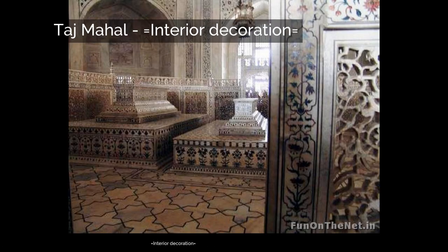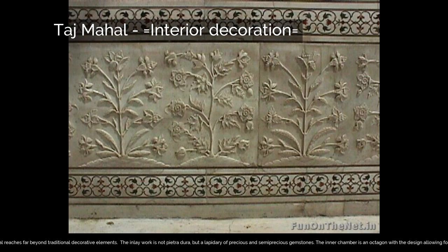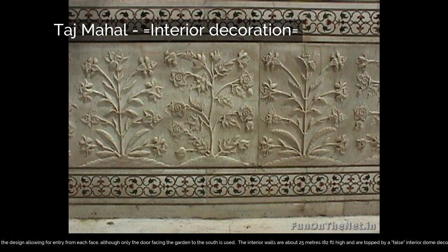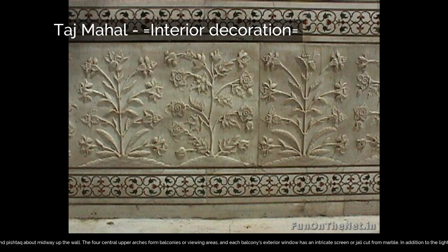The interior chamber of the Taj Mahal reaches far beyond traditional decorative elements. The inlay work is not pietra dura but a lapidary of precious and semi-precious gemstones. The inner chamber is an octagon with the design allowing for entry from each face, although only the door facing the garden to the south is used. The interior walls are about 25 meters, or 82 feet, high and are topped by a false interior dome decorated with a sun motif. Eight pishtak arches define the space at ground level, and each lower pishtak is crowned by a second pishtak about midway up the wall. The four central upper arches form balconies or viewing areas, and each balcony's exterior window has an intricate screen cut from marble. Light also enters through roof openings covered by chatris at the corners.